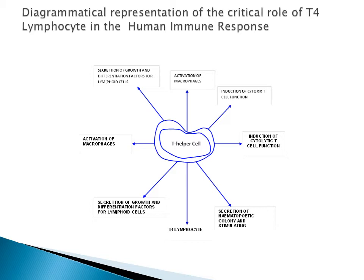Once the virus infects and destroys the T helper cells, it gains the upper hand over the individual. It is like having 100 soldiers defending a country — when enemies destroy 20, you have fewer people doing what more were expected to do, and it cannot be done well. At that point you start having what we call opportunistic infections — infections that a well-functioning immune system would normally be able to address — but now they get established.